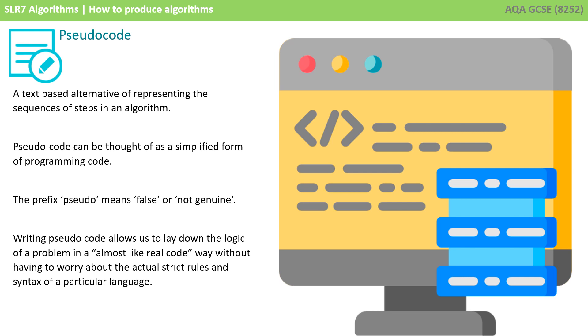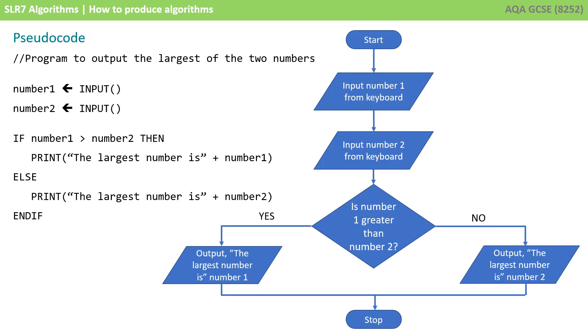We can represent that algorithm using what's called pseudocode. Pseudocode is like a halfway between English language and actual programming code in a programming language. It looks a little bit like a programming language, but doesn't follow any specific syntax for one given language. Instead, it's more generic code that could easily be applied into any programming language that a programmer wants to use.